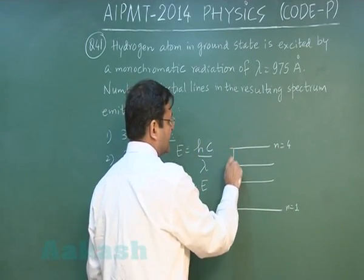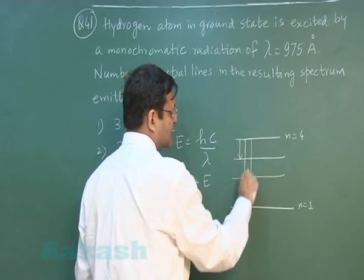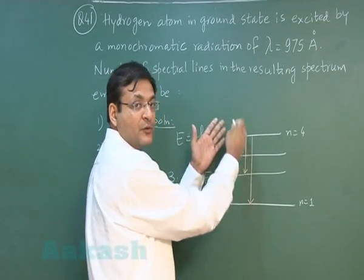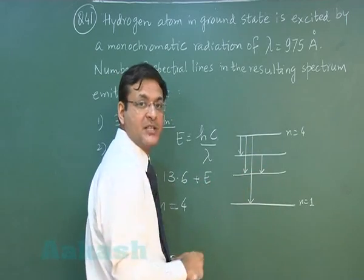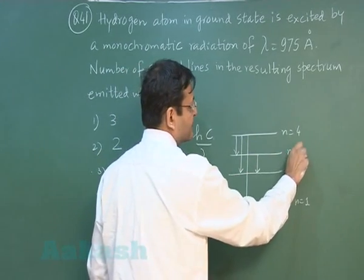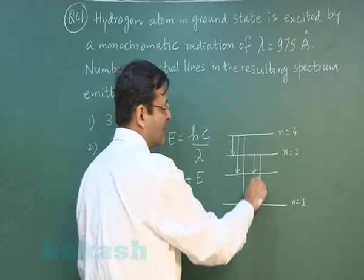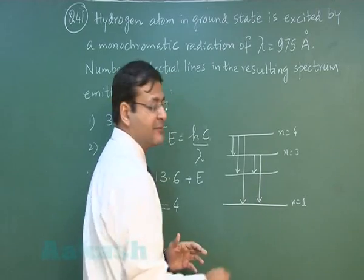Now you see the spectral lines possible, they are something like this. First from 4 to 3, 4 to 2 and 4 to 1. In between if they are trapped on say n is equal to 3, then they can come up to 2, they can come up to 1.